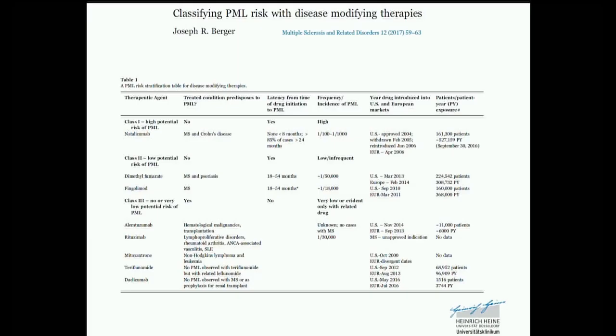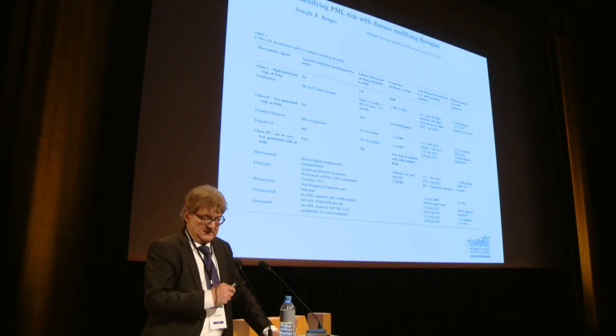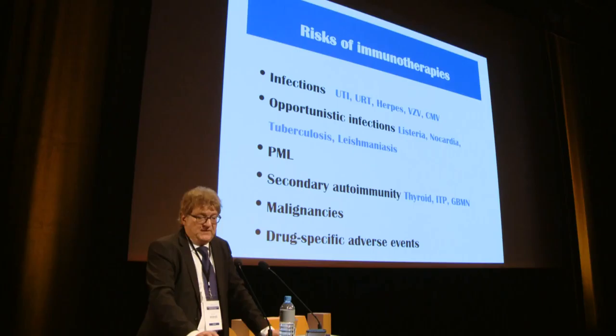Natalizumab is not the only MS drug carrying PML risk, but its propensity is unexplained relative to others where the risk is much smaller. Altogether, approximately 750 cases of natalizumab-associated PML have been recorded, and about 30-plus with other drugs.